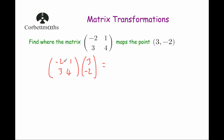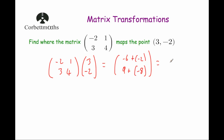To multiply this, we multiply the first row by the column. Minus 2 times 3 is minus 6, and 1 times minus 2 is minus 2. Adding them together gives minus 8. For the bottom number, we multiply the second row by the column: 3 times 3 is 9, and 4 times minus 2 is minus 8. Adding gives 1. So the point maps to (−8, 1).